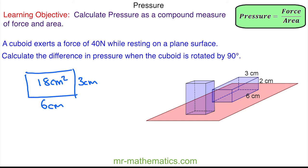So the pressure would be the force of 40 N divided by the area which is 18 cm², and this is approximately 2.2 newtons per centimeters squared.